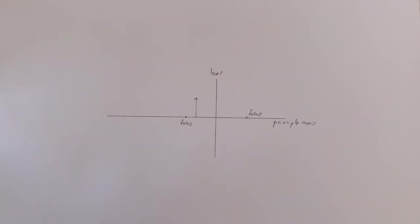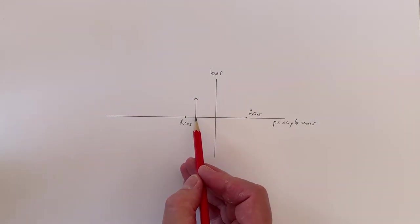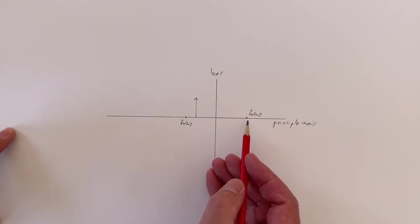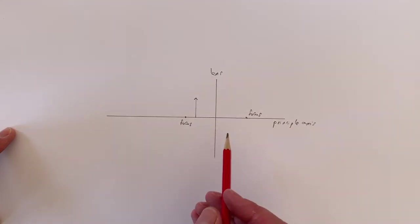So, let's have a look at what happens in the situation where the object is closer to the lens than the focus. You'll notice that I've actually placed a focus on both sides of the lens. These are both the same distance from the lens so that you can see just how close the object is.